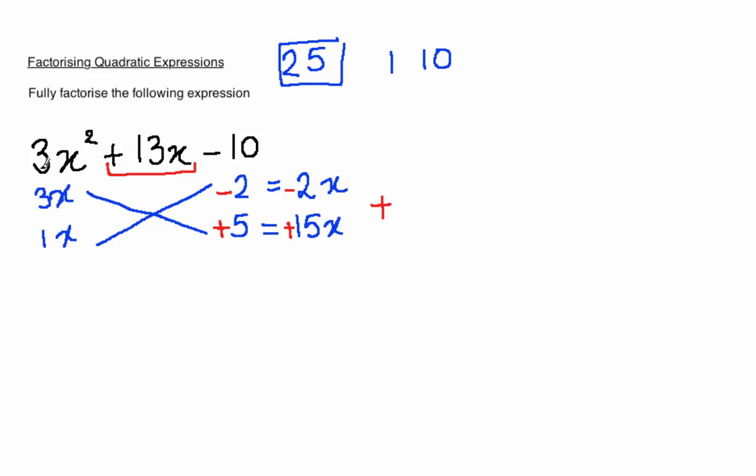3x times 1x does give us 3x squared, so that's fine. Minus 2 times plus 5 does give us minus 10, so that's correct. Minus 2x plus 15x does give us plus 13. So that works as well.